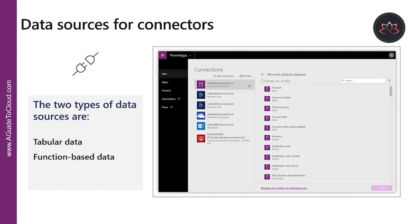Let's understand the data sources for connectors. The two types of data sources are tabular and function-based. A tabular data source returns data in a structured table format, and Power Apps can directly read and display these tables through galleries, forms, and other controls. Additionally, if the data source is supported, Power Apps can create, edit, and delete data. Examples include Common Data Service, SharePoint, and SQL Server.